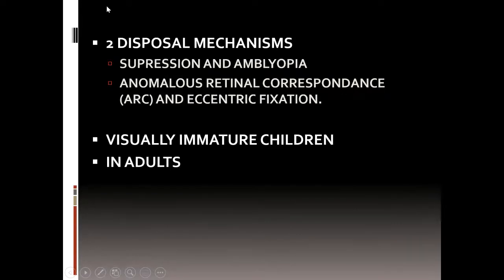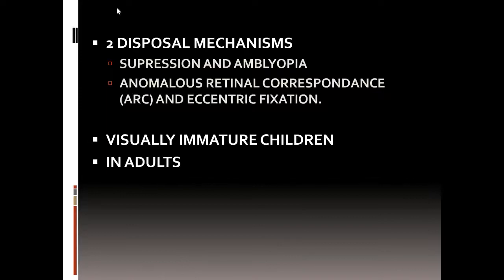Both confusion and diplopia are relevant when there is a manifest deviation. There are two disposal mechanisms when you have esotropia: either suppression, which may lead to amblyopia, or abnormal retinal correspondence with eccentric fixation. This can occur only in young, visually immature children. Suppression is a binocular disposal mechanism operating when both eyes are open. Amblyopia is monocular — the whole pathway including the lateral geniculate body shows anatomical changes — whereas in suppression there are no anatomical changes at the level of the cortex or brain.